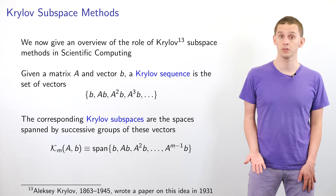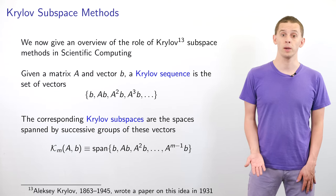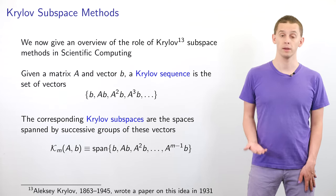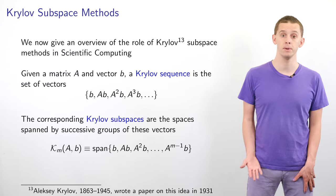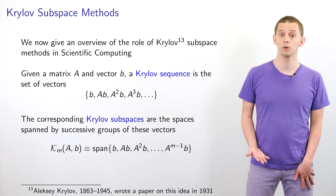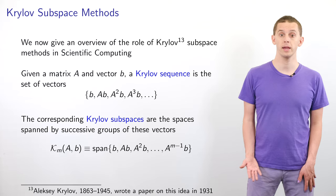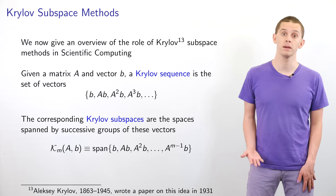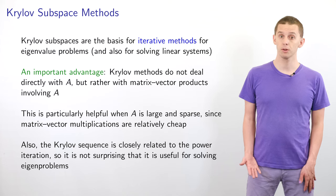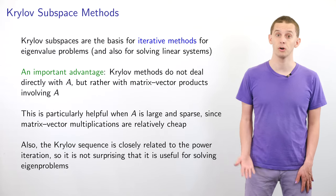We now give an overview of the role of Krylov subspace methods in scientific computing. Suppose we have a matrix A and a vector B; then we can define a Krylov sequence by repeatedly multiplying B by A. So we end up with the set of vectors B, AB, A²B, A³B, and so on. We can define corresponding Krylov subspaces as the spaces spanned by successive groups of these vectors. So K_M of A,B is defined as the span of B, AB, A²B, up to A^{M-1}B. Krylov subspaces are the basis for iterative methods for eigenvalue problems and can also be used to solve linear systems.